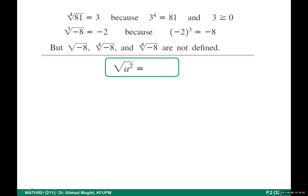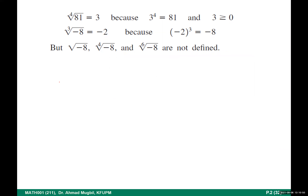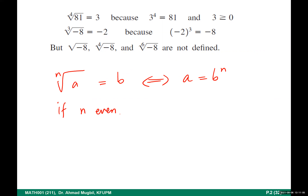We said in the previous class: what do we mean by the nth root of a? If the nth root of a equals b, this is equivalent to saying that a equals b to the power n. If n is even, there is a condition: both a and b must be non-negative. If the index of the root is odd, we could have it positive or negative.